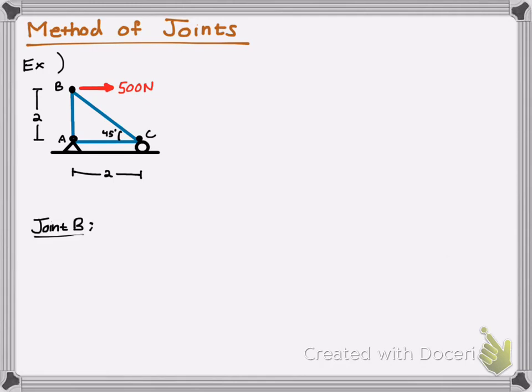Let's start off by drawing the free-body diagram at joint B. Our object is to find the internal forces of this beam here, of these trusses, or this truss represented by beam AB and BC and AC.